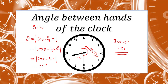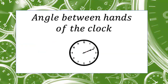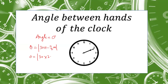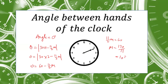Now let's use the formula for the case where the two hands meet — that is, the angle is given as 0 degrees. We have to find the time after 2 when the two hands overlap. Putting in the formula: 0 = 30(2) − (11/2)M, so (11/2)M = 60, giving M = 120/11 = 10 and 10/11 minutes. So the time is 2:10 and 10/11 minutes.